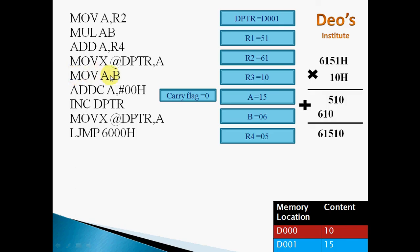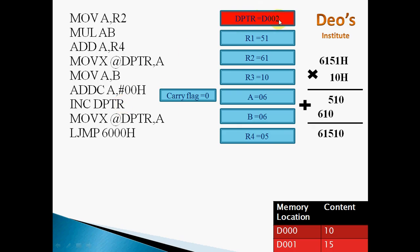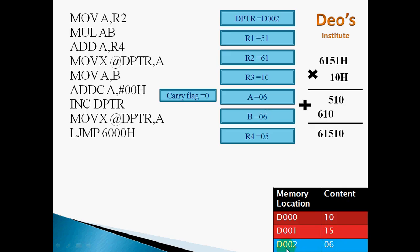Next, MOV A, B — the last higher byte from 61 multiplied by 10 gave 610, so 6 is the higher byte in B register. From B it is moved to A register. Then ADDC A, #00H — but since carry flag is 0, the contents of A remain as 6. Increment DPTR — DPTR is incremented by 1 to store the next higher byte. MOVX @DPTR, A — A contains 6, so 6 will be moved to D002H.